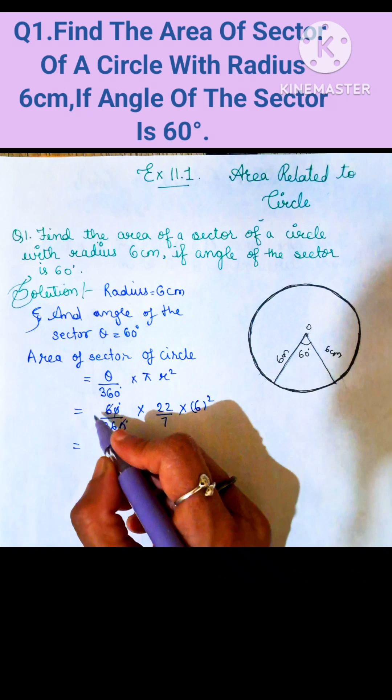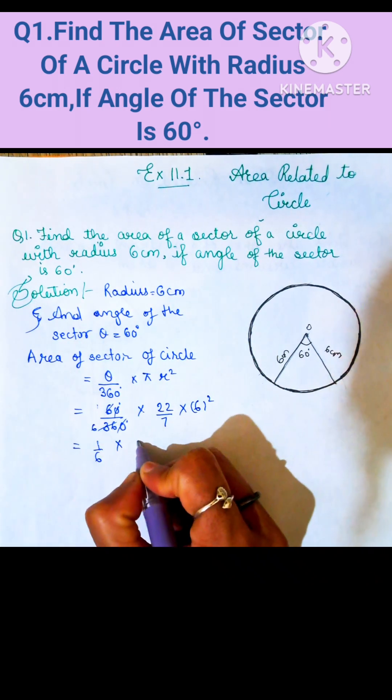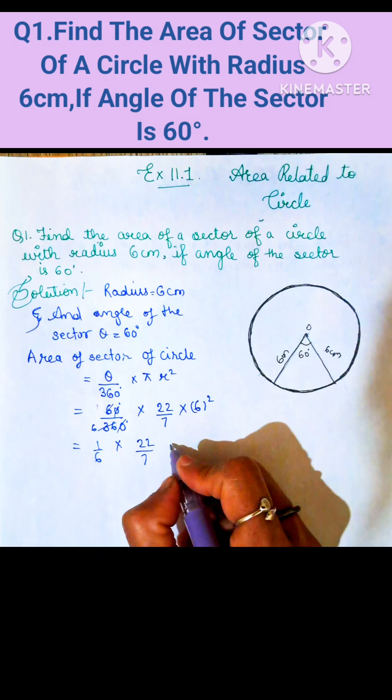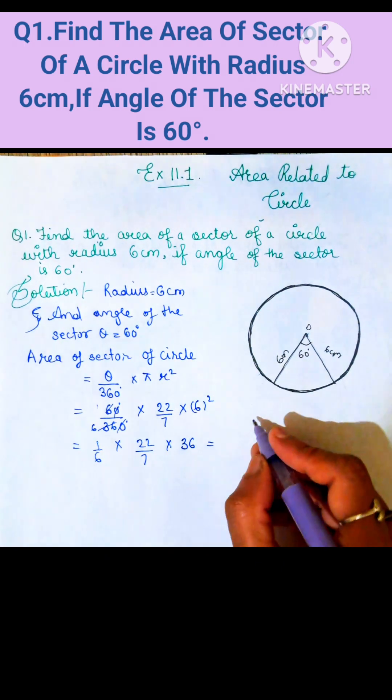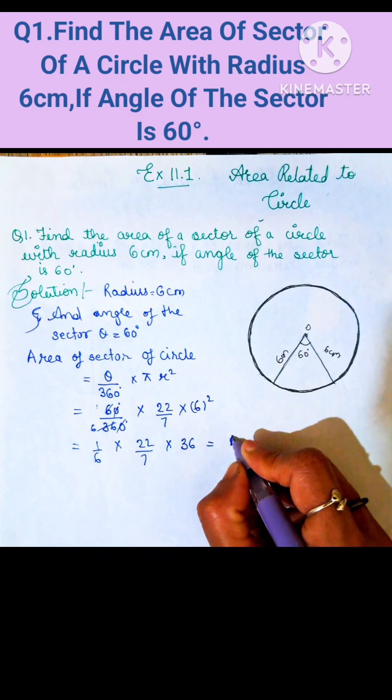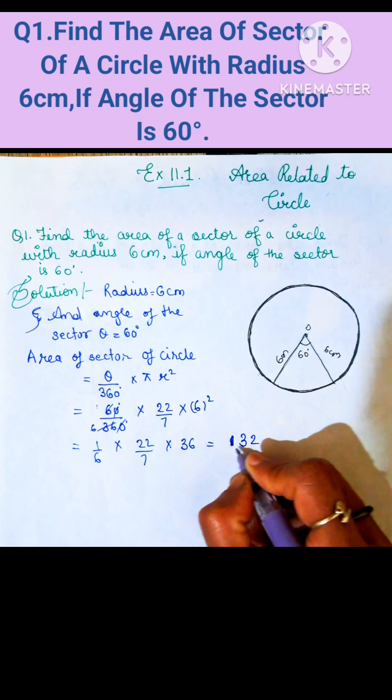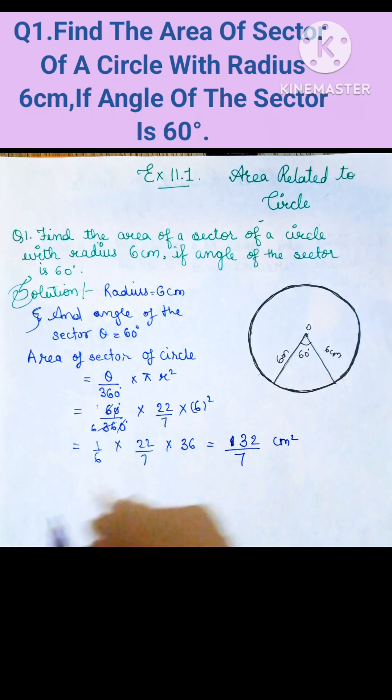60 and 360 cancel to become 1 by 6, into 22 divided by 7, into 6 into 6 equals 36. While solving this, we get 132 divided by 7 cm square.